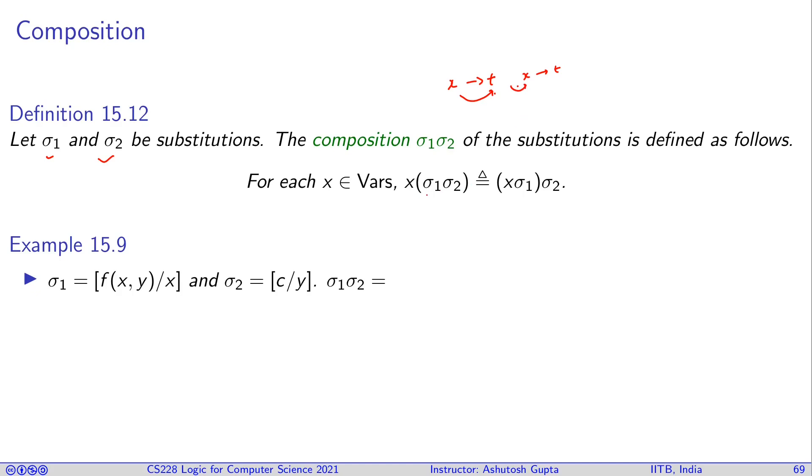This is defined as follows. It will be written as sigma one sigma two. If you write it this way, that means first I am going to apply sigma one, and then on the resulting term I am going to apply sigma two. That will be the composition of my two substitutions.